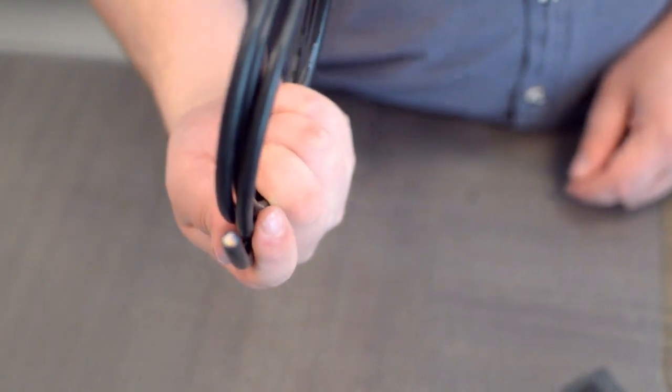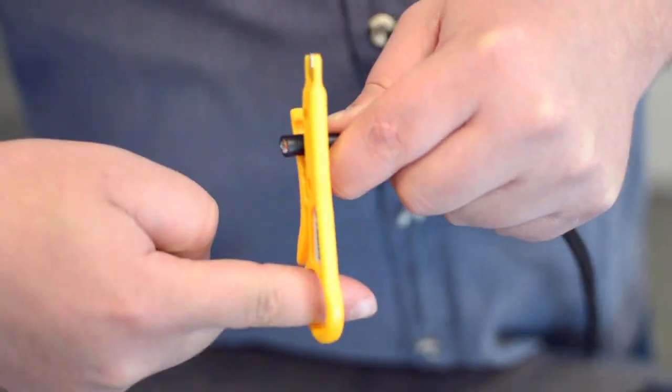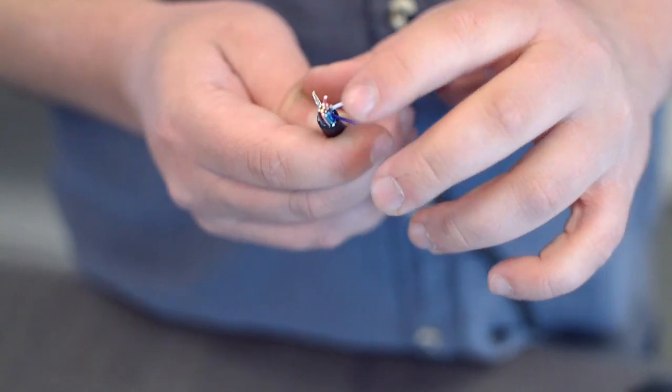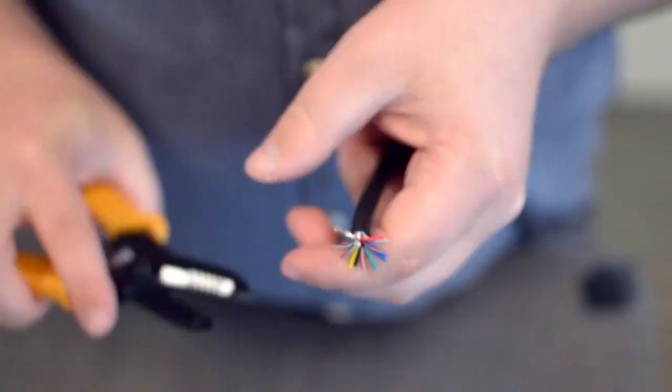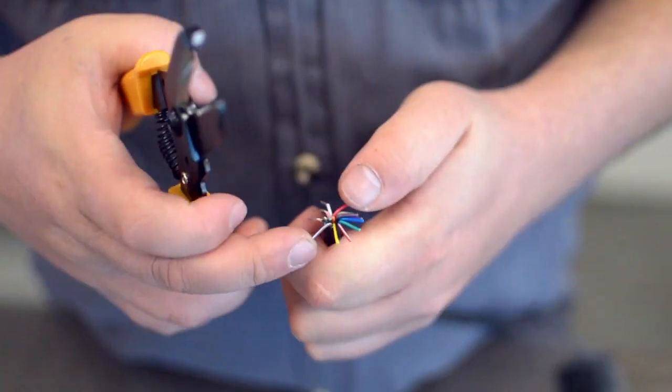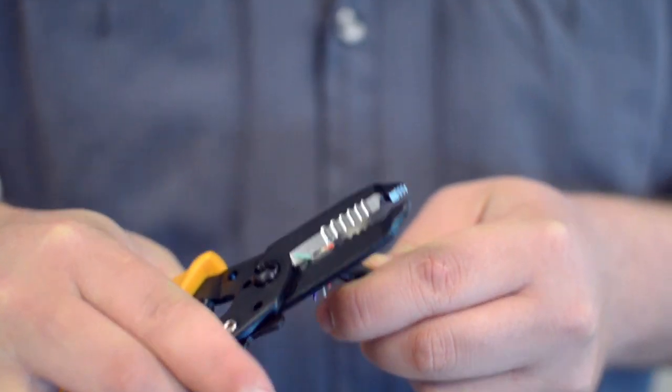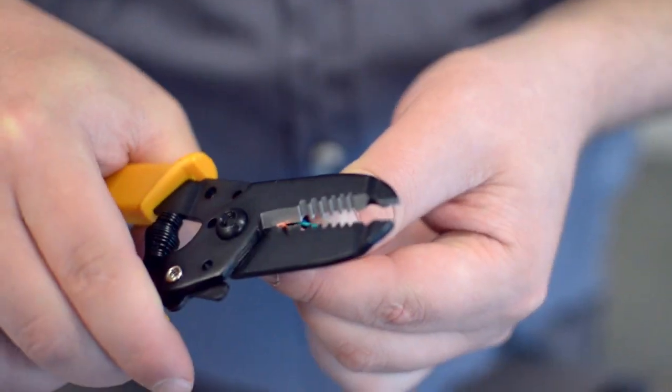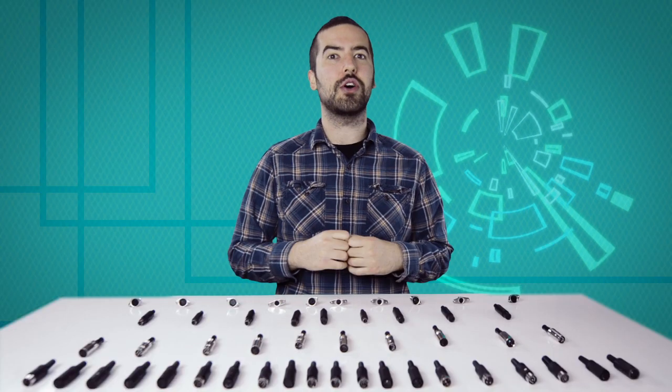For this example, we will be using a 15-conductor serial cable. You will also need to strip the individual conductors. Trim off any additional conductors if needed. Now comes the hard part.